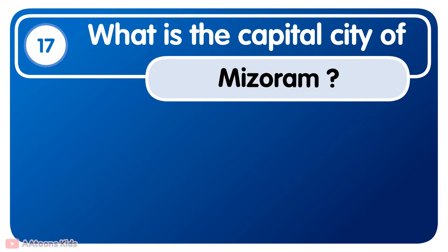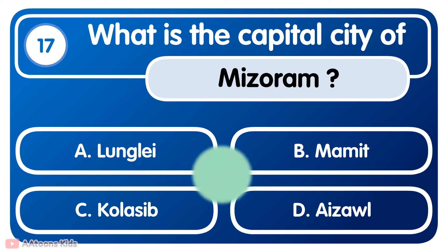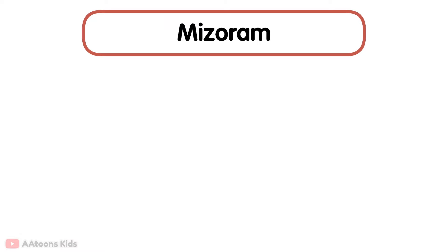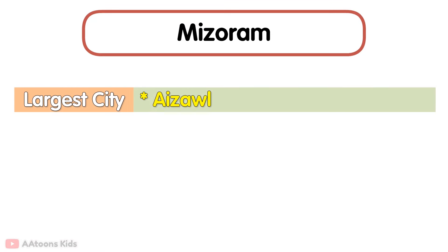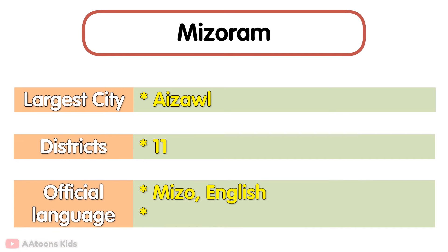What is the capital city of Mizoram? Aizawl. Aizawl is the capital city of Mizoram. The largest city in Mizoram is Aizawl. It has a total of 11 districts. Its official languages are Mizo and English.